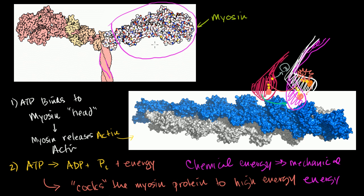In the last video, we learned how myosin — myosin-2 in particular, which actually has two myosin heads with their tails intertwined with each other — can use ATP to essentially pull an actin filament or walk up an actin filament.